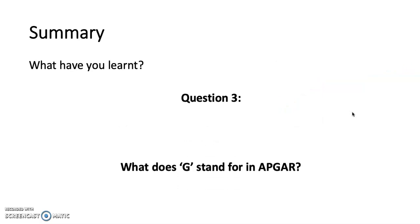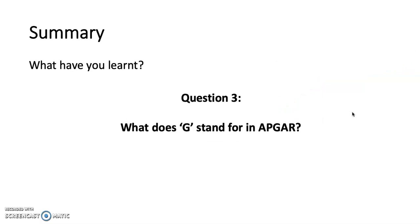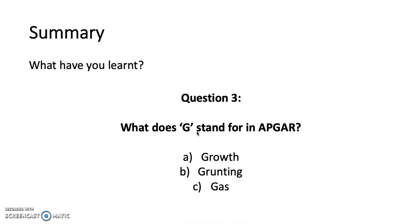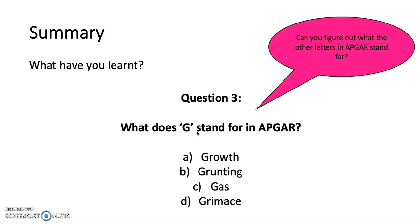Finally, question three: what does the G stand for in the APGAR score? Is it A) growth, B) grimting, C) gas, or D) grimace? Can you figure out what the other letters stand for? The answer is D, grimace. The full APGAR score stands for: Appearance, Pulse, Grimace, Activity, and Respiratory effort.